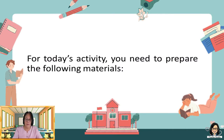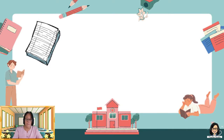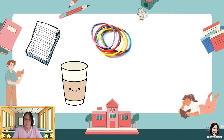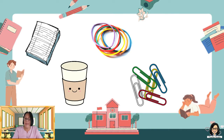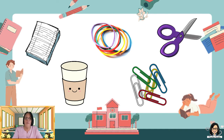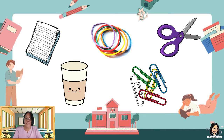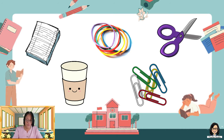For today's activity, you need to prepare the following materials: paper, paper cap, rubber band, paper clip, and scissor. Ito ang mga kagamitan na kakailangan natin upang malaman paano nga ba nababago ang ilang mga solid materials na nasa paligid natin. Kids, pause this video for a while and look for the materials. Okay? Go!